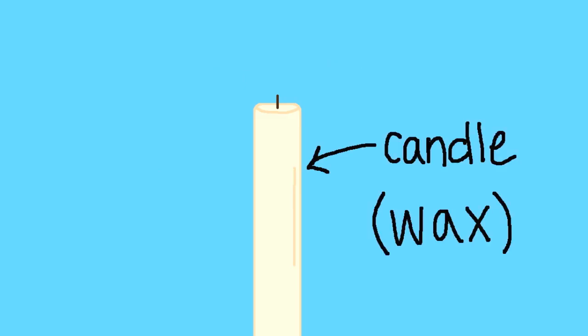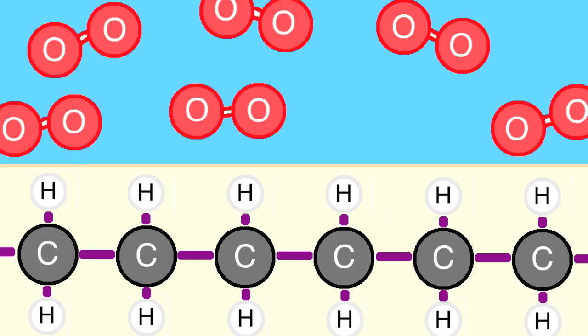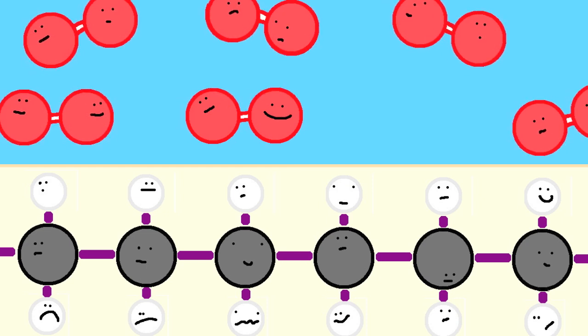We have a candle made of wax, and we have air around it. The wax is mostly made of long chains of carbon and hydrogen. The air has oxygen. When we're at room temperature, the carbon and hydrogen in the wax and the oxygen in the air more or less ignore each other.